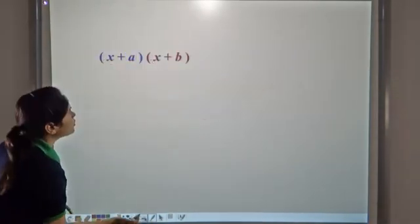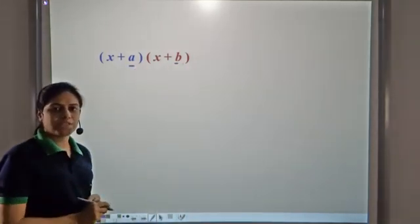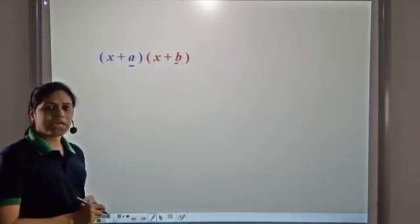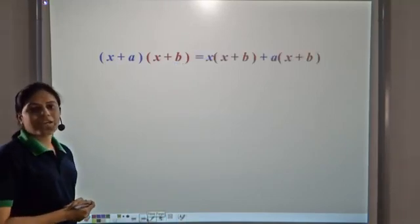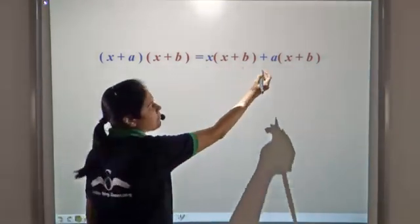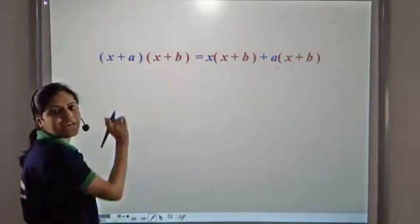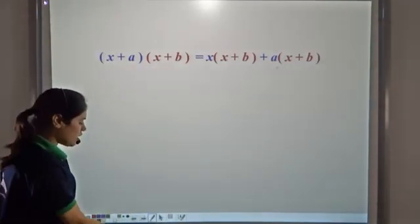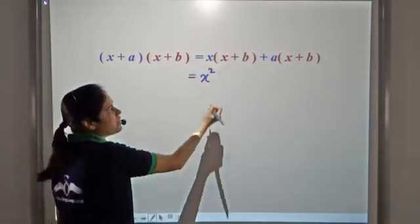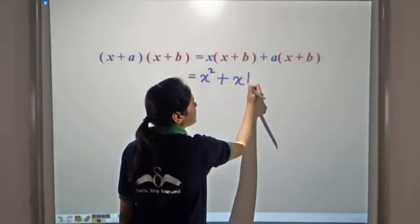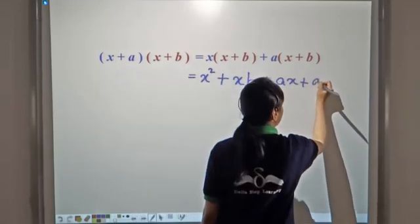Let us check it. We take a and b in place of 2 and 3 — a and b could be any numbers. Now let us expand it. We can write it as x(x+b) plus a(x+b), distributing (x+a) over (x+b). This gives x times x as x², x times b as xb, a times x as ax, and a times b as ab.